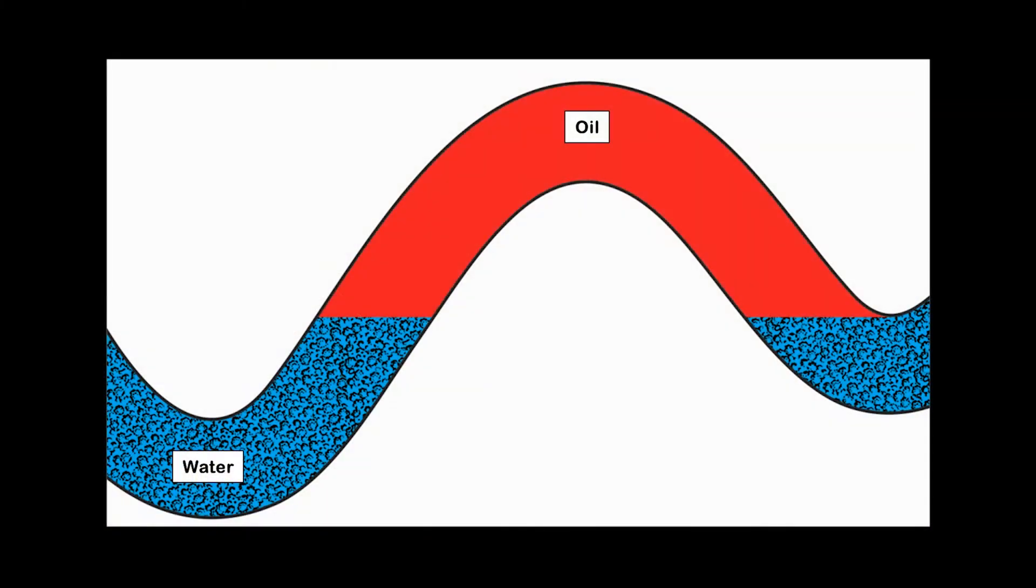In the case of an oil-saturated trap, the contact between oil-saturated rock and water-saturated rock is called the oil-water contact, OWC, which is the deepest point of producible oil. A good question would be, why is there only oil in this trap?